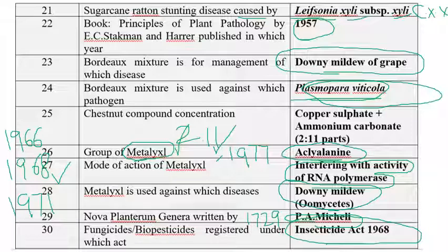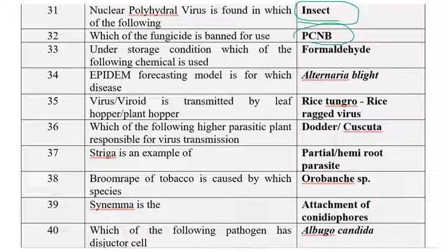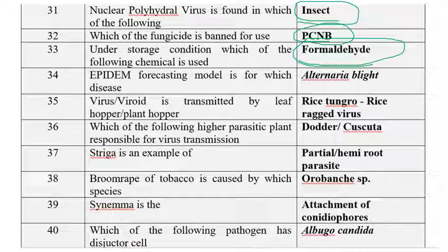Nuclear Polyhedrosis Virus (NPV) is found in insects. The fungicide PCNB is banned among the given options. Under storage conditions, formaldehyde can be used. Epidem is a forecasting model recommended for Alternaria blight caused by Alternaria solani — it is recommended for early blight of tomato and potato.